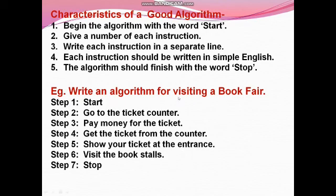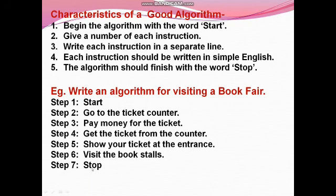For example, write an algorithm for visiting a book fair. Step one: Start. Step two: Go to the ticket counter. Step three: Pay money for the ticket. Step four: Get the ticket from the counter. Step five: Show your ticket at the entrance. Step six: Visit the book stalls. After that, Stop. This is the algorithm for visiting a book fair.